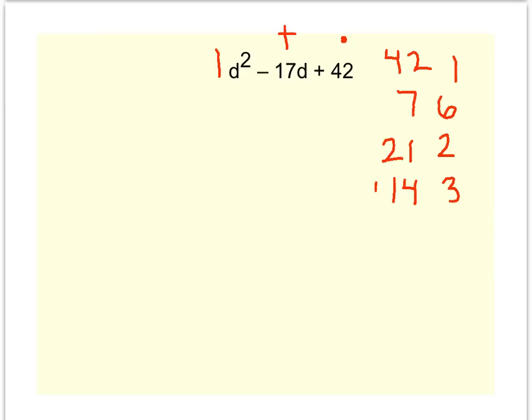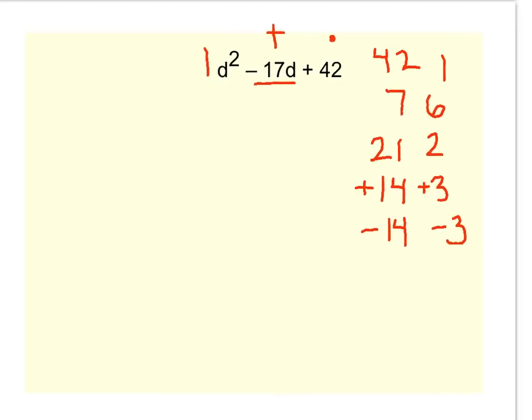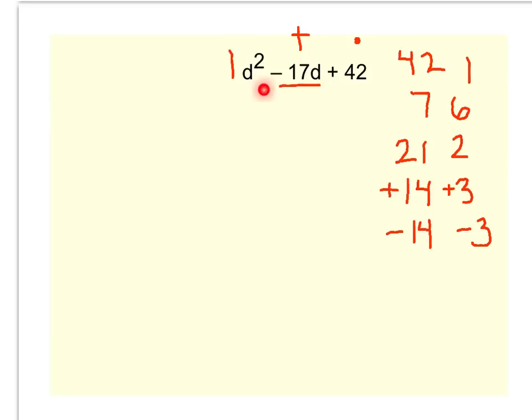Now, here's the thing. A positive 14 and a positive 3 would give me a positive 17. I need a negative 17. So a negative 14 plus a negative 3, that's what adds to a negative 17 and multiplies to a positive 42, because negative 14 times negative 3 is positive 42. Negative 14 plus a negative 3 is negative 17. So there is our choice.